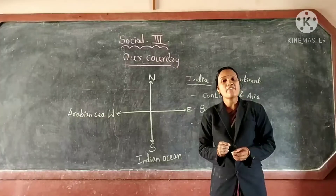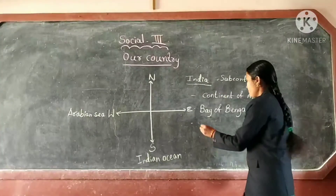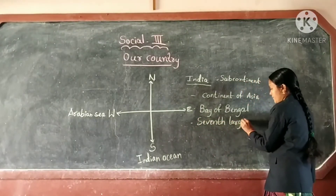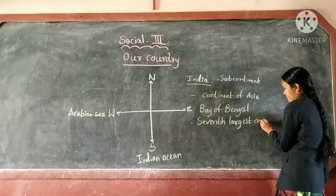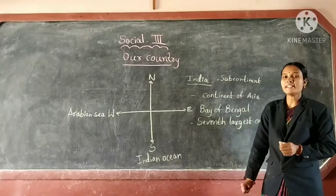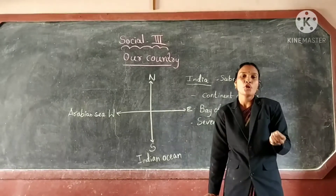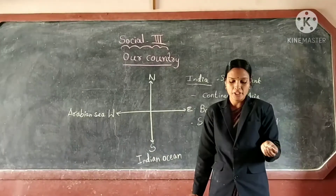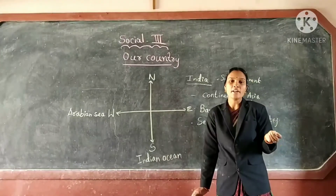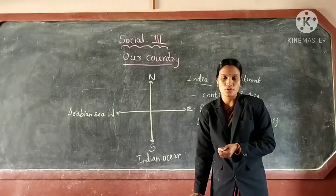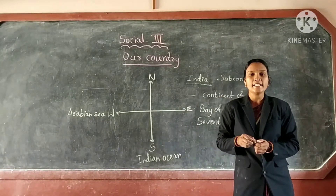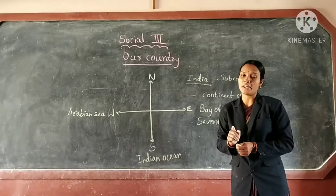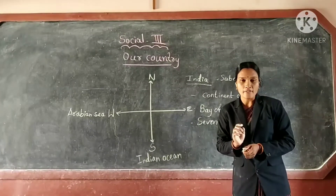India is the seventh largest country in the world. It is the second most populated country, with a population of more than 100 crores. The first most populated country is China.